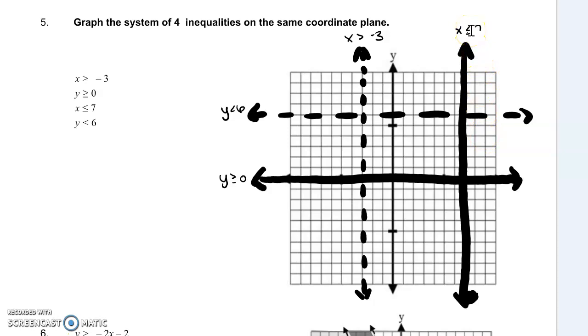I graph to the left of x is less than or equal to 7 and to the right of x is greater than negative 3, in between my vertical lines. That leaves this section in here as the only possible solution set.